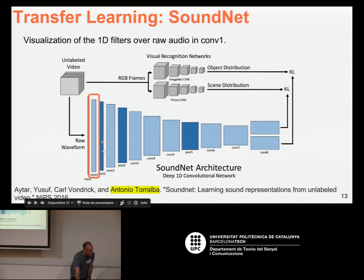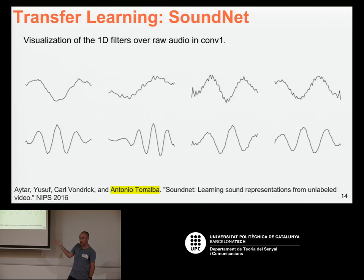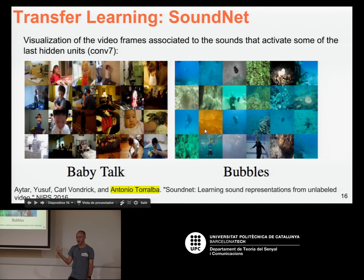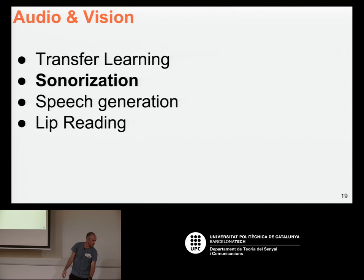They also looked at this layer, and what you see here are 1D filters applied to the raw audio. That's the kind of filters that were learned — not visual filters like the rest of the course, but filters applied on the raw audio waveform. These were learned, in the end, from labels from ImageNet, because that's the only supervision in the whole architecture. They also looked deeper in the network and saw similar things to what I described earlier: some neurons activated for specific events like baby sounds or bubbles. Play these videos at home — all the things you can do combining audio and video.